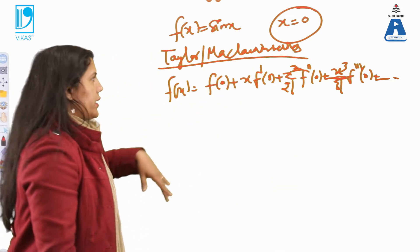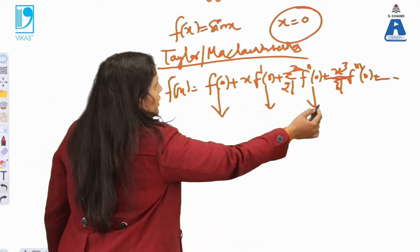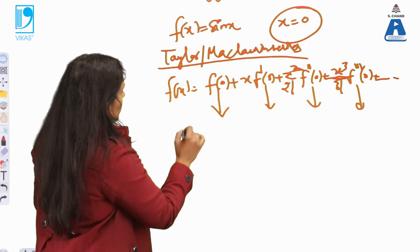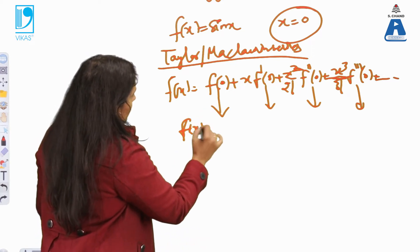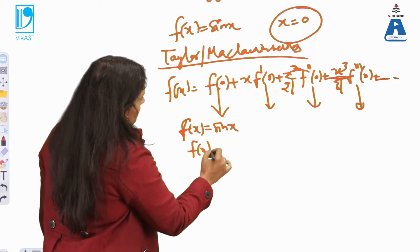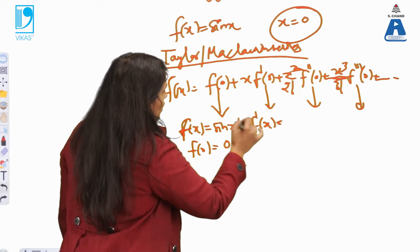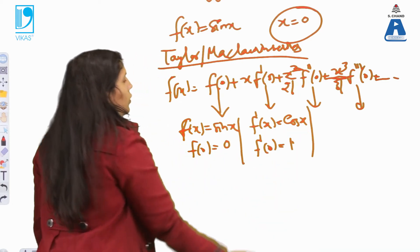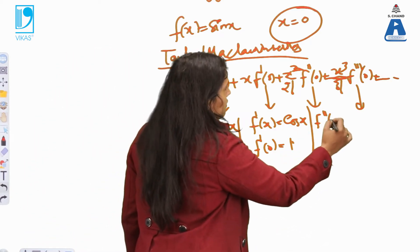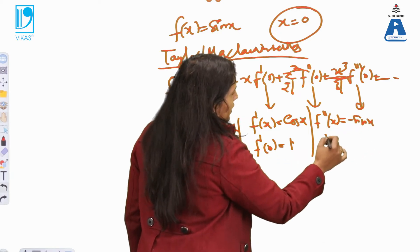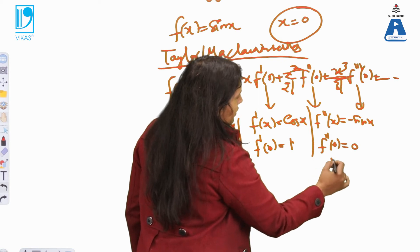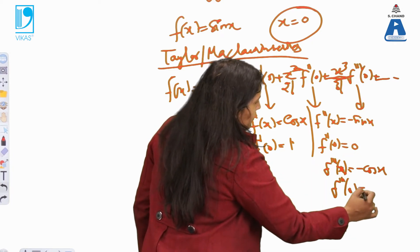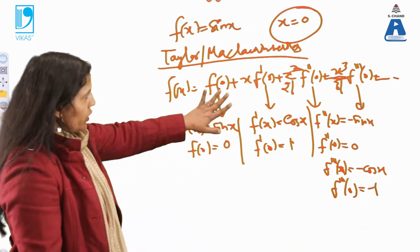Now what are the values I need? f(0), f'(0), f''(0), f'''(0). I'll find these values and put them into the series. f(x) is sin x, so f(0) = sin 0 = 0. f'(x) = cos x, so f'(0) = cos 0 = 1. The second derivative is minus sin x, so f''(0) = 0. The third derivative is minus cos x, so f'''(0) = minus 1. I got all derivative values at 0.